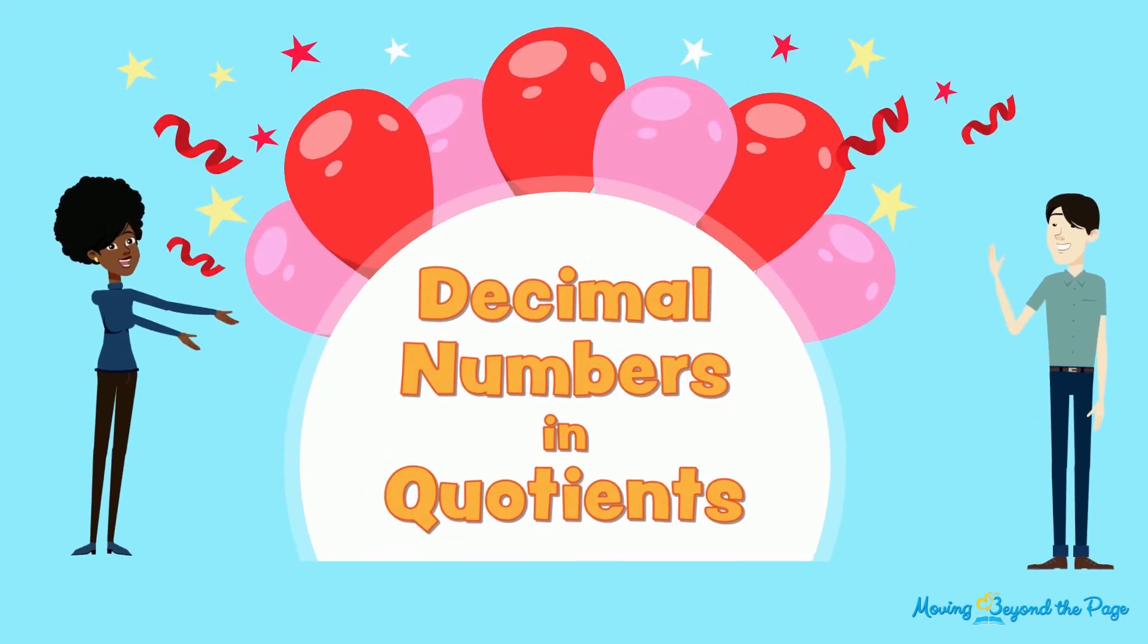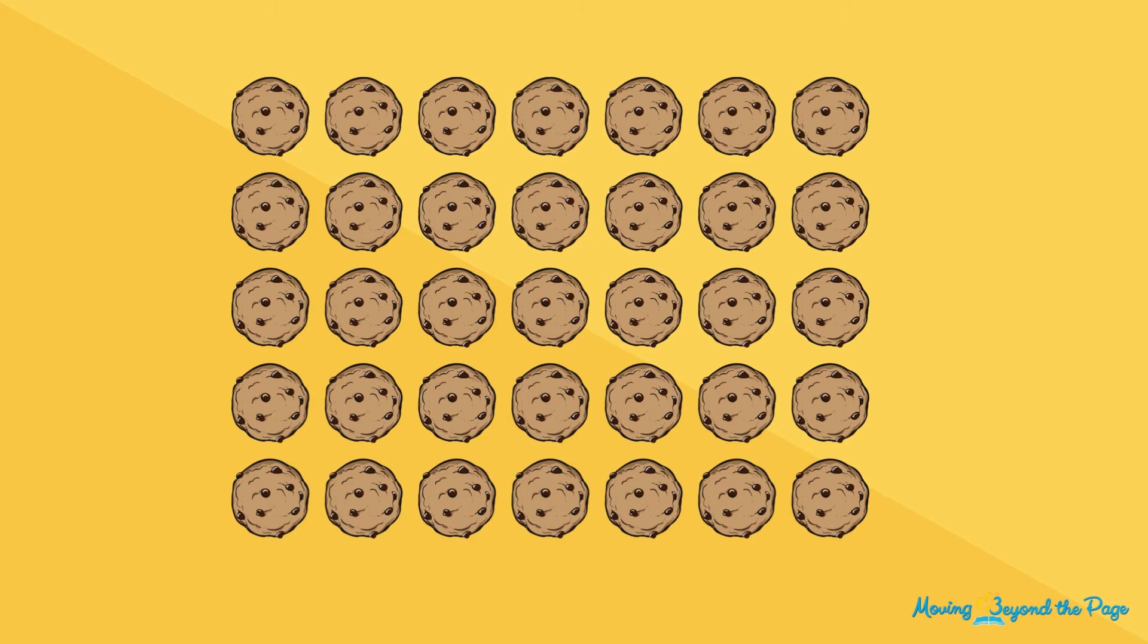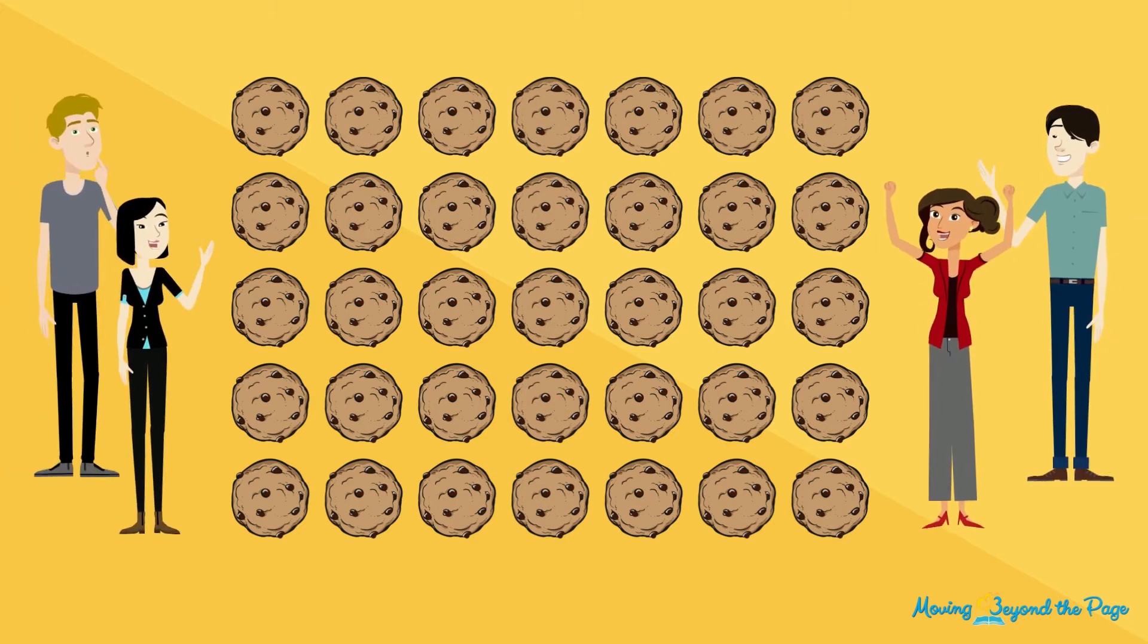Decimal Numbers in Quotients. Say you have 35 cookies that you want to give to 4 friends so that each friend gets the same number of cookies.